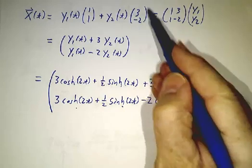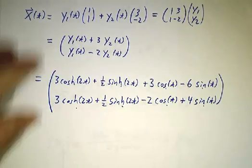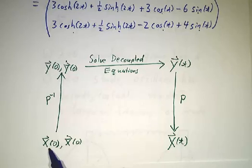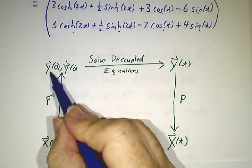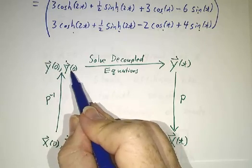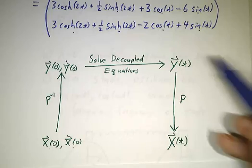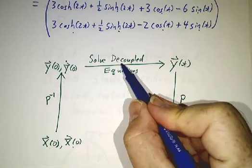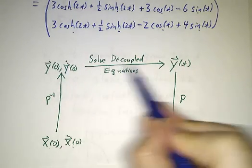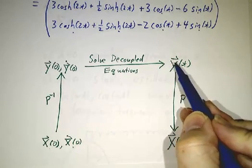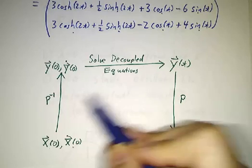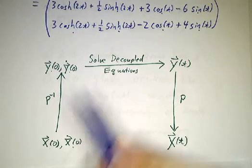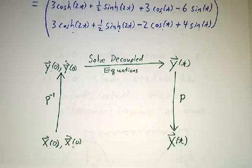So in other words, our whole picture is we take our initial value and initial derivative, use P inverse to get the initial value and derivative of the y coordinates, solve these things one at a time, then convert back. The only difference between this and the first order difference equation or differential equations is we could write this horizontal step as multiplication by a nice matrix. It was D to the n or e to the Dt. Here it's a little bit more subtle. You have to solve the equations and it involves both the initial values and the initial derivatives, but it's still one variable at a time. And that makes it easier.